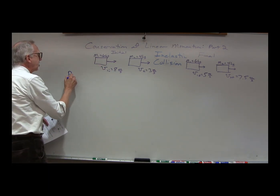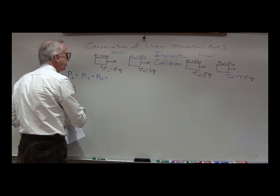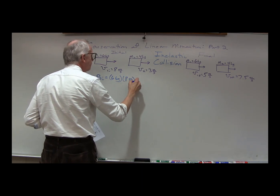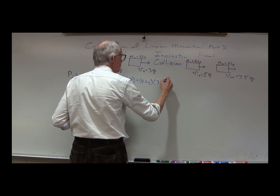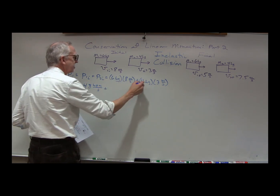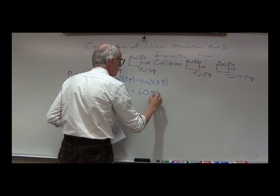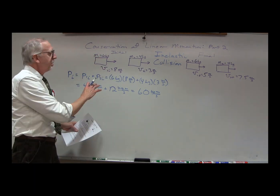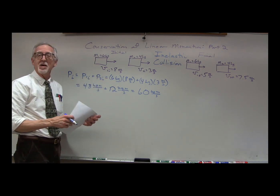The total initial momentum is M1 times V1 initial plus M2 times V2 initial: 6 kilograms times 8 meters per second plus 4 kilograms times 3 meters per second. That gives us 48 plus 12, equal to 60 kilogram meters per second — exactly what we got before, as expected since the initial situation is the same. The velocity of the center of mass initially is 60 divided by 10 kilograms, which equals 6 meters per second.